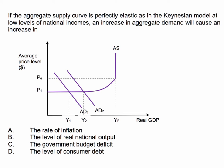AD has shifted out from AD1 to AD2 on the perfectly elastic portion of the Keynesian aggregate supply curve. What will that cause? The answer is B — an increase in the level of real national output. It's not going to cause inflation, of course, because the price level stays at P1.